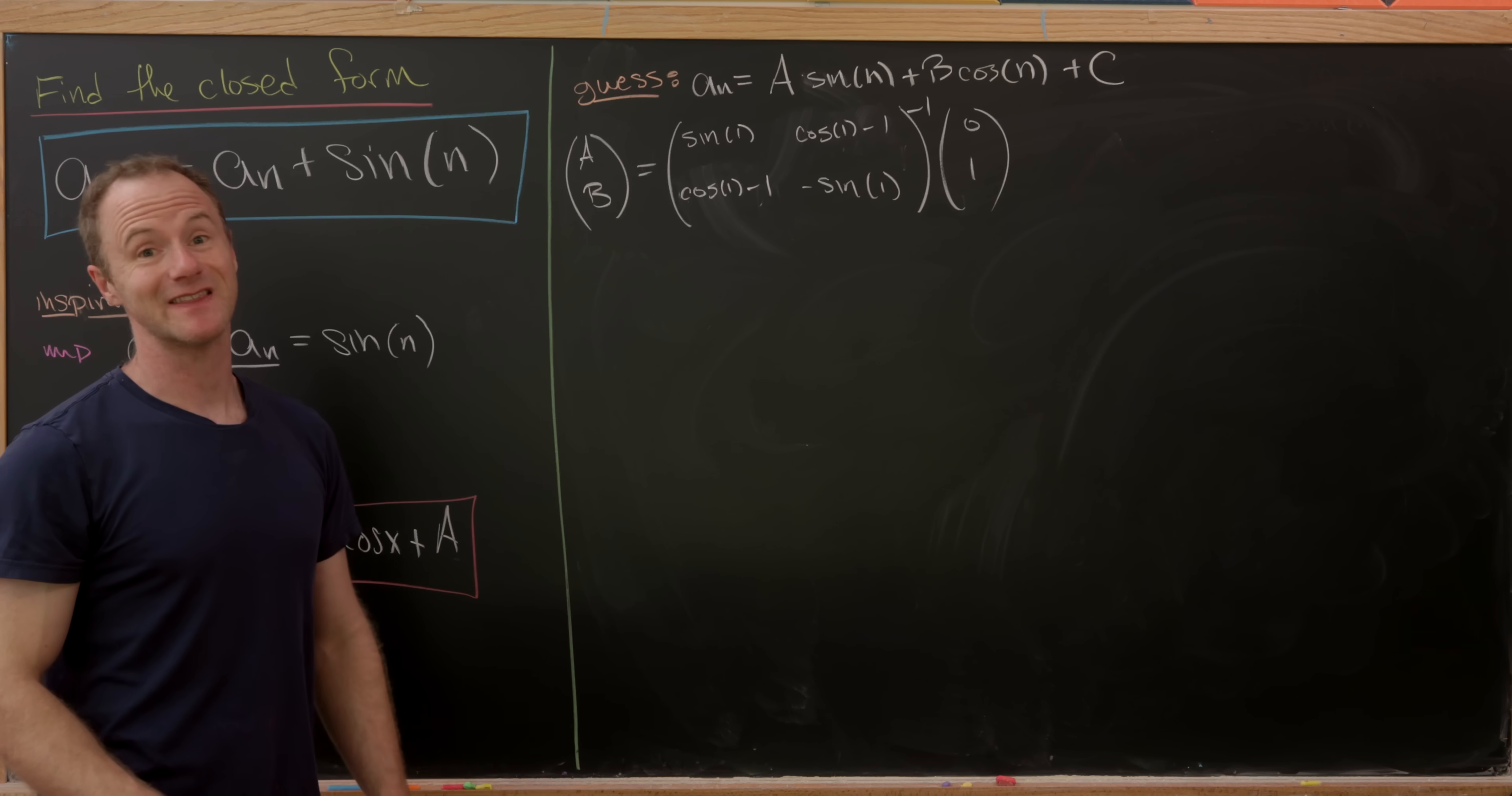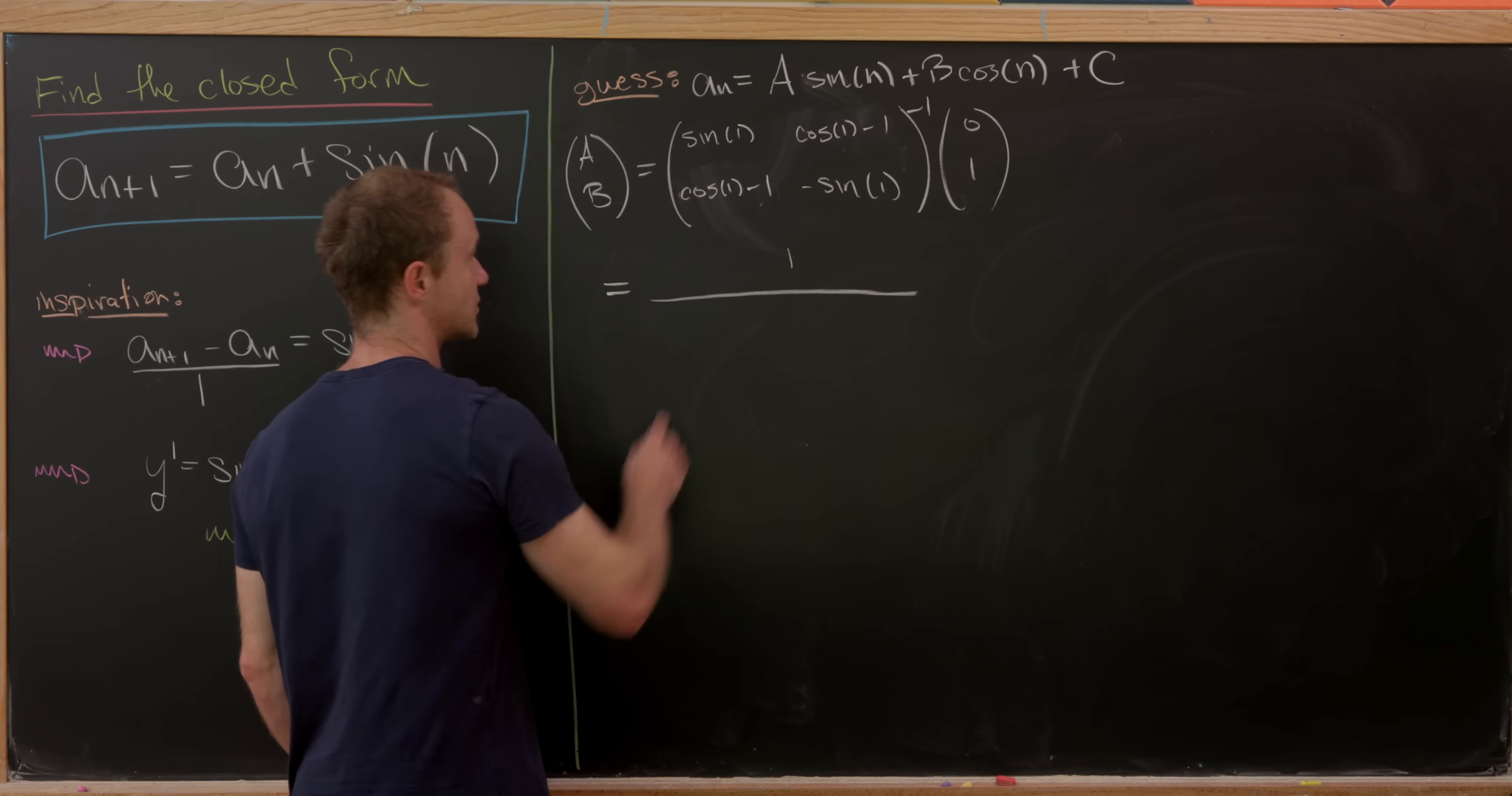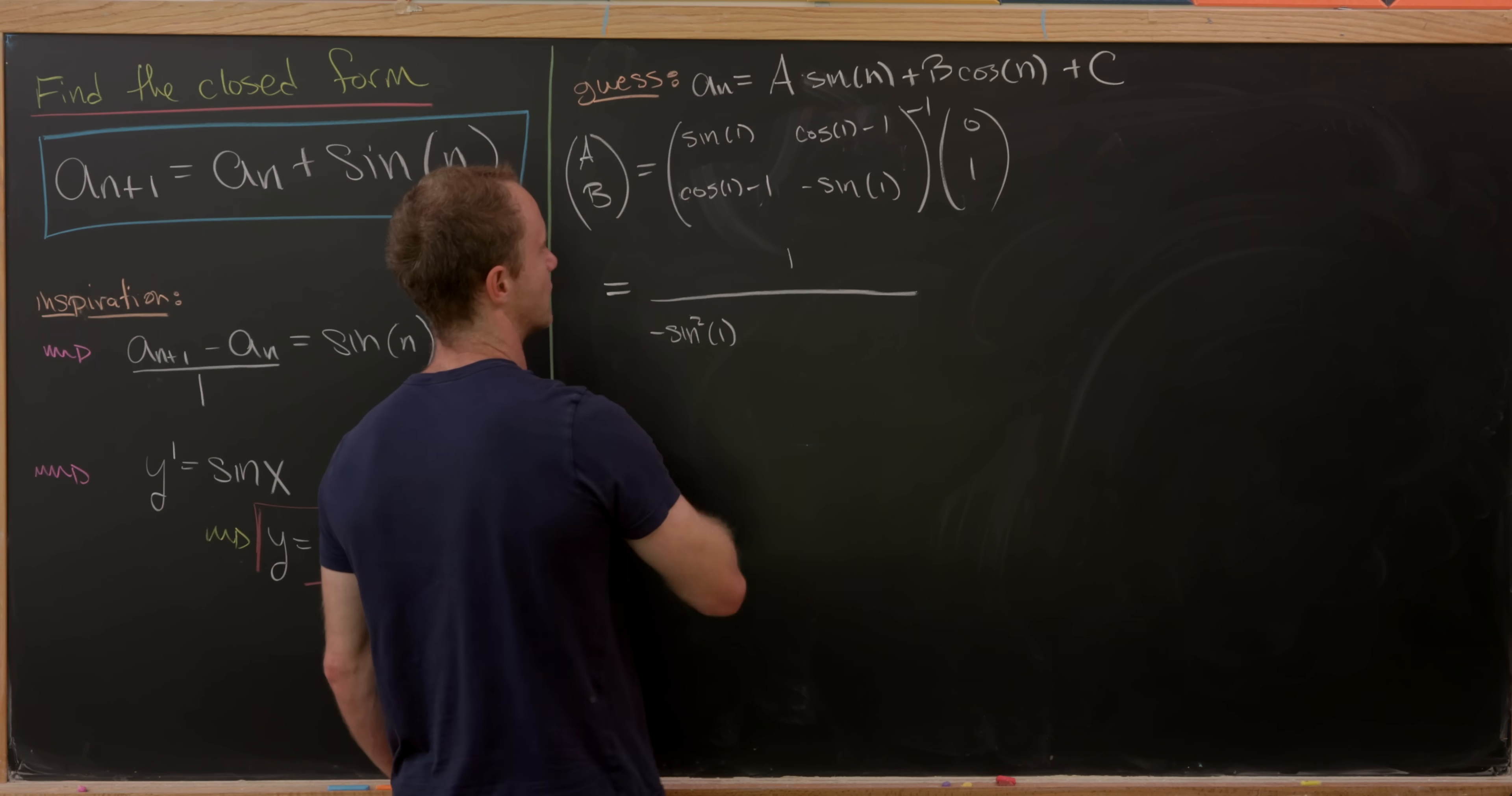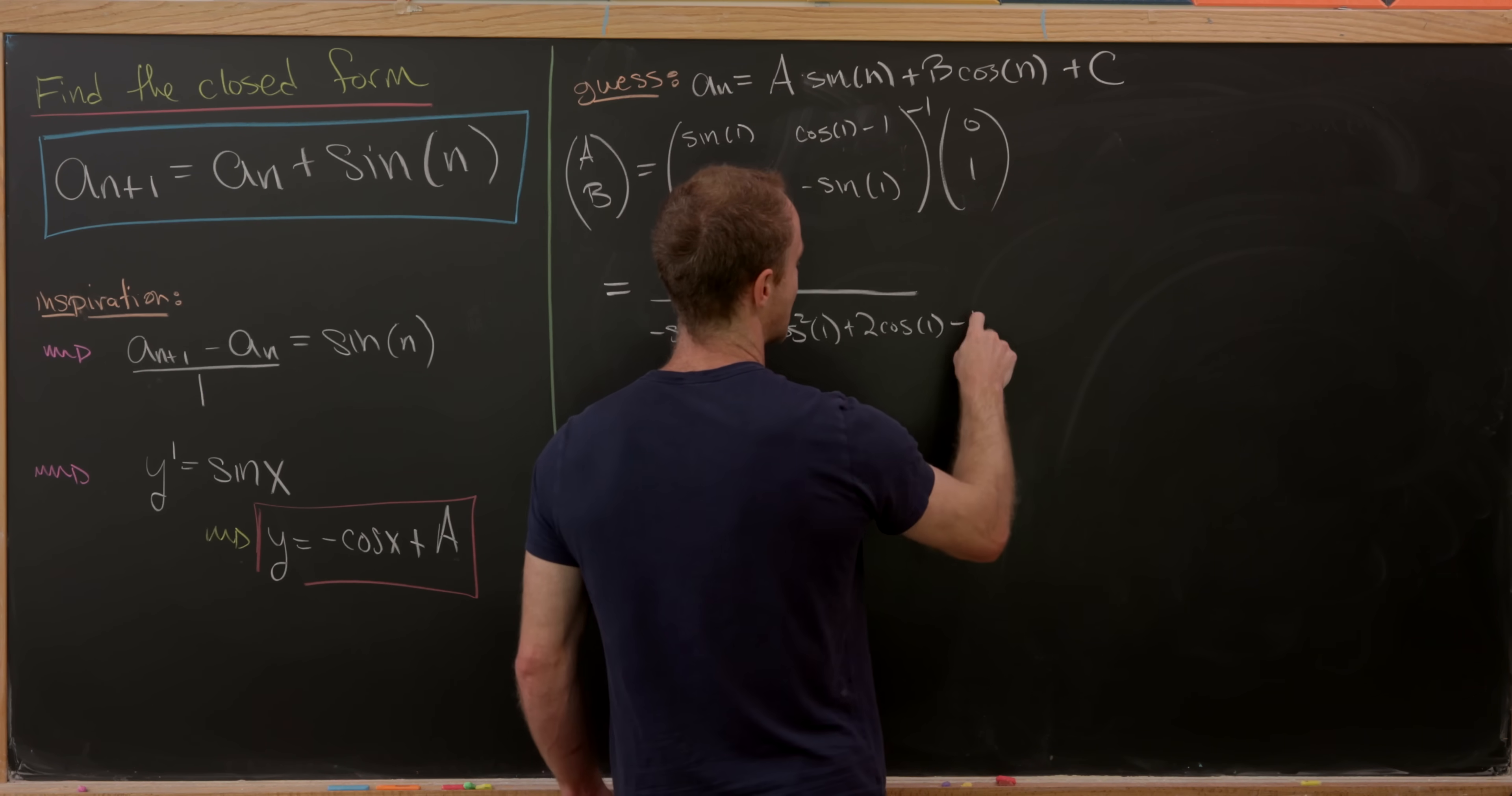So let's start by taking the inverse of this matrix. But since it's a 2 by 2 matrix, there's an easy way to do that. So we'll have 1 over its determinant, which is the product of the diagonals minus the product of the off diagonals. So that'll leave us with negative sine squared of 1. And then we'll have minus cosine of 1. And then minus 1.